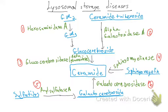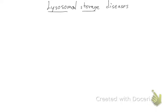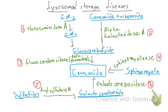Each enzyme in the diagram is numbered, and those numbers correspond to the associated diseases. So enzyme 1 is hexosaminidase A, enzyme 2 is alpha-galactosidase A, and so on. The purpose of the numbers is to name the diseases associated with each enzyme deficiency.